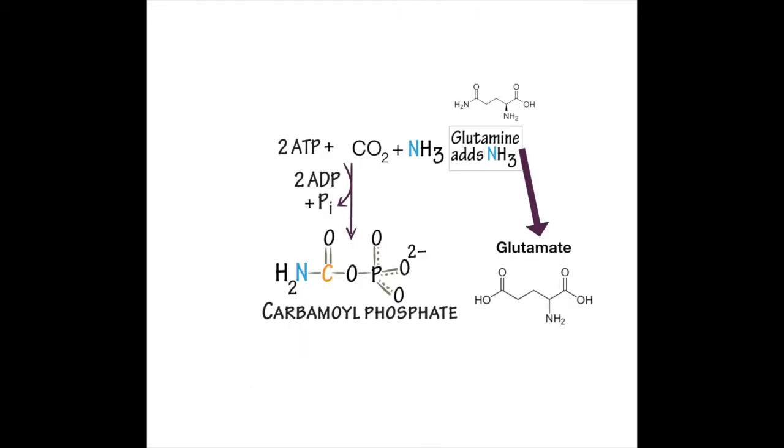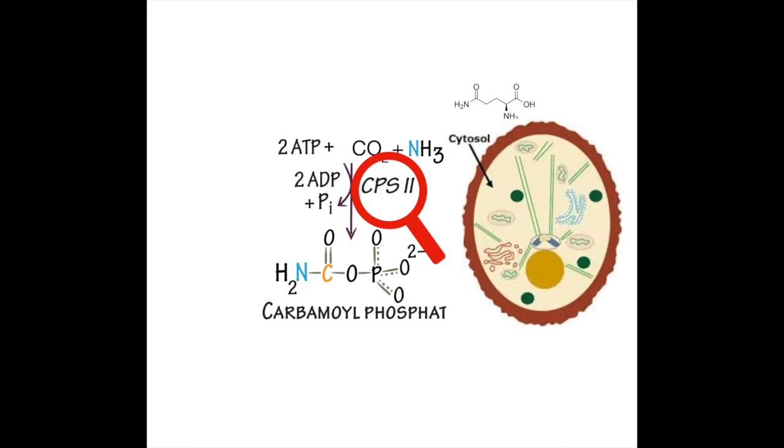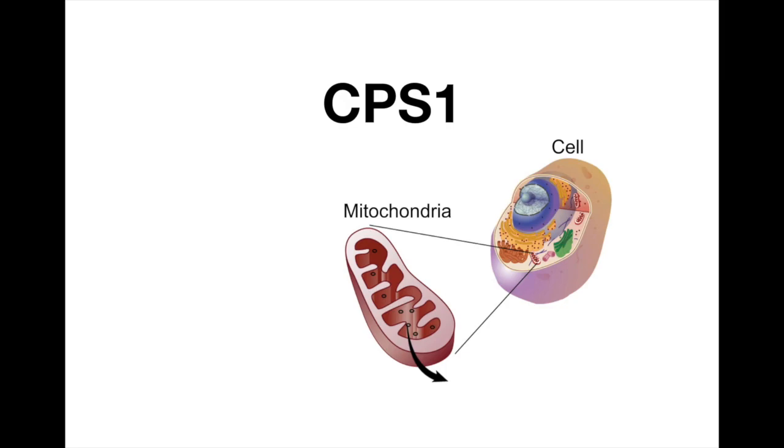An important thing to remember is that carbamoyl phosphate synthetase-2 from the first step of pyrimidine synthesis, also known as CPS2, happens in the cytosol. Did you hear that? Where its cousin CPS1 catalyzes its reaction in the mitochondria.